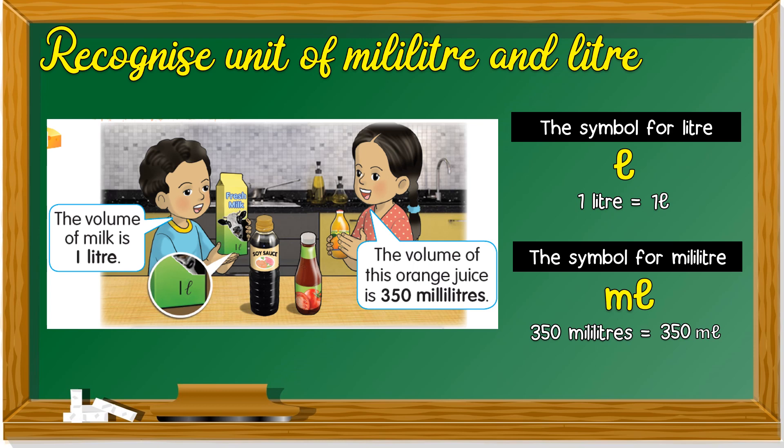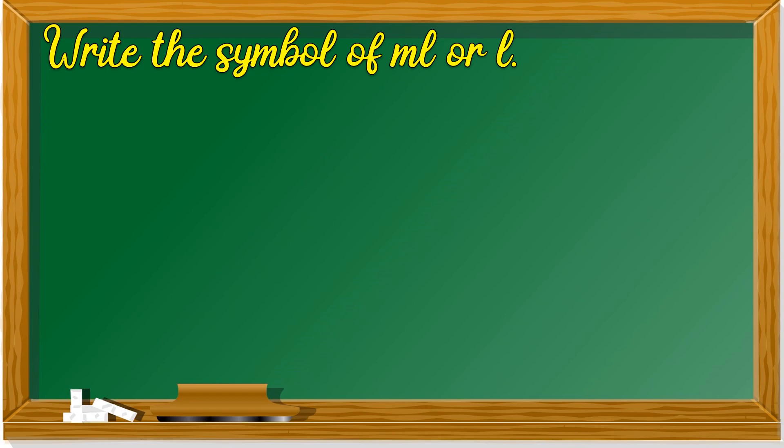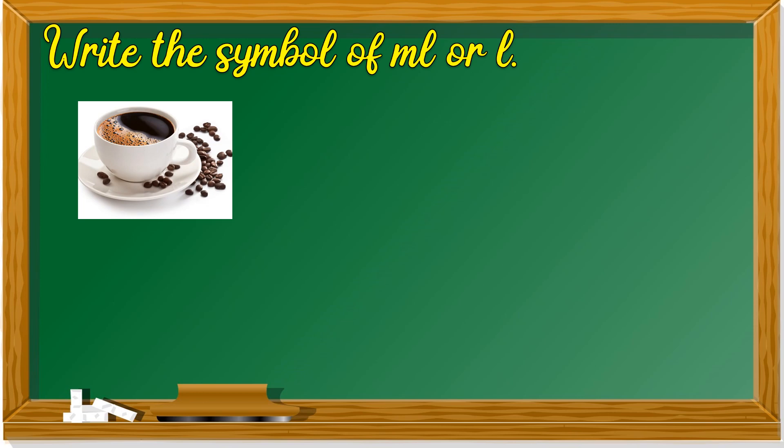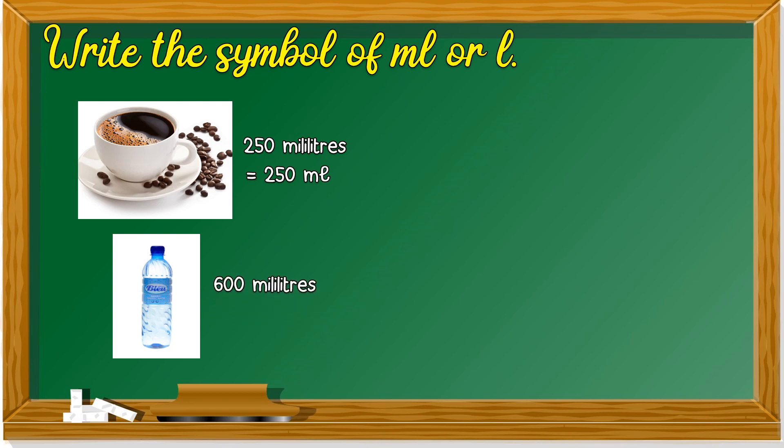Remember, when you write the L, you have to write it like this. Write the symbol of ML or L. A cup of coffee. Do you think it's ML or L? If it's 250 milliliters, then it's 250 ML. A cup of coffee, 600 milliliters. ML or L? Yes, ML. 600 ML.